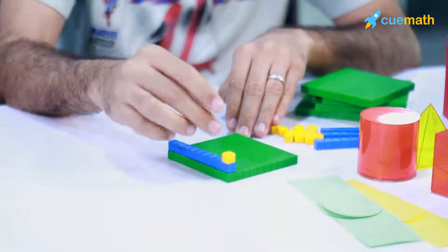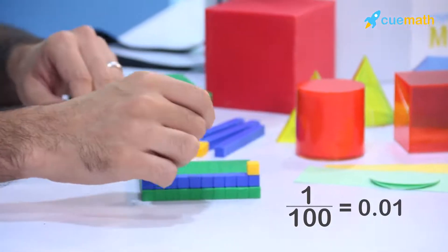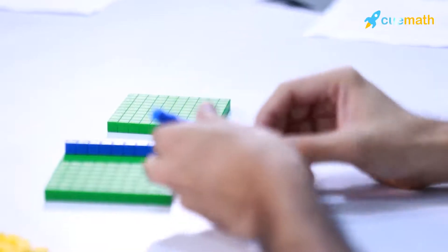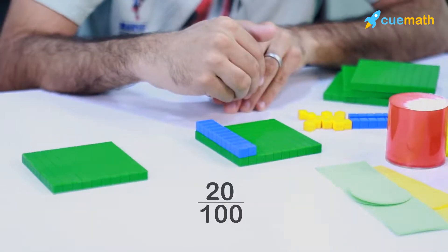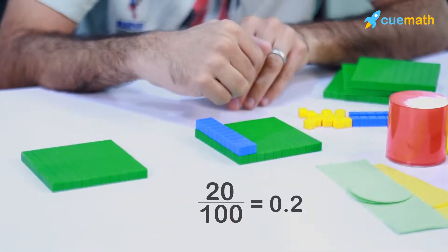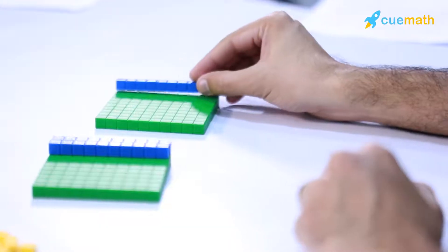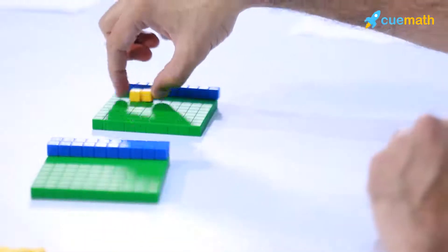Now this is 10 on a total surface area of 100, so this is 10/100 or 0.1, and this is one block on a total of 100 blocks, so it's 1/100, that's 0.01. So if I have to build 0.2 on this system, I would take two rods and I would essentially have 20 on 100, and this gives me 0.2. Now if I have to build 0.19, I will have to take one rod, which gives me 10, and I will have to take nine small blocks.